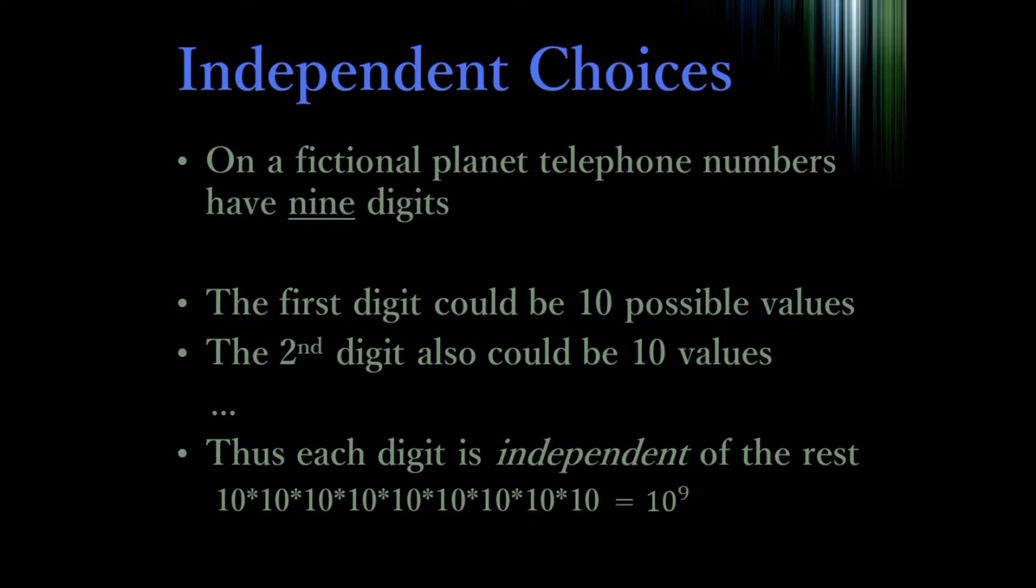This is the case any time the choices are independent, such as if you had to choose a day of the week and an hour of the day. Your first choice would be seven possibilities, and your second choice would be 24 possibilities. So the answer would simply be seven times 24 different options. But independent choices are rather boring. Let's move on to dependent choices.